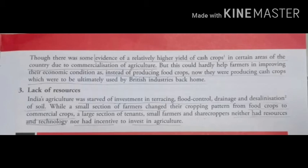Yahan tak ki Bharat mein food crops par bhi bilkul dhyan nahi diya jata tha — yani gehu, bajra, chana, makka — in sab ke liye bhi Bharat ko videshon ki daya par rahna padta tha. Mercy of USA — USA mein jo wheat produce hota tha, wahi wheat Bharat laaya jata tha, aur Bharat mein paida hone wala ganna, kapas raw material ki roop mein British countries mein jaata tha, aur tayaar maal ban kar Bharat aata tha.